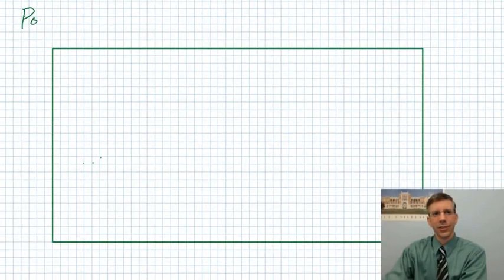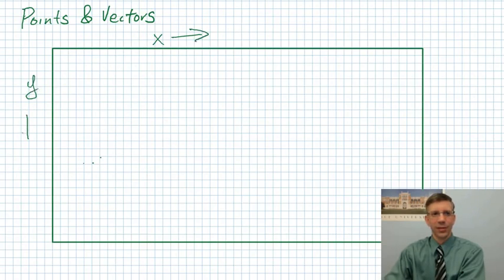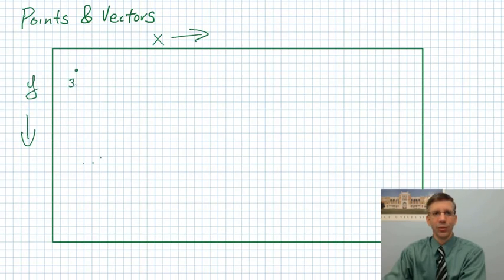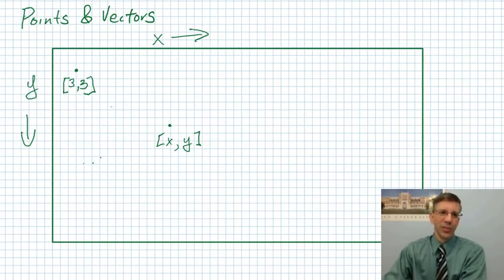I actually snuck in some discussion of points and vectors in that last program, so I want to step back and talk about them explicitly. Here is my drawing area with an x-coordinate and a y-coordinate. A point — for example, the point (3, 3) — is 3 over in x and 3 down in y, and in Python we represent those as lists. That was the ball position: we were representing the center of the circle as one of these points with an x-y coordinate.